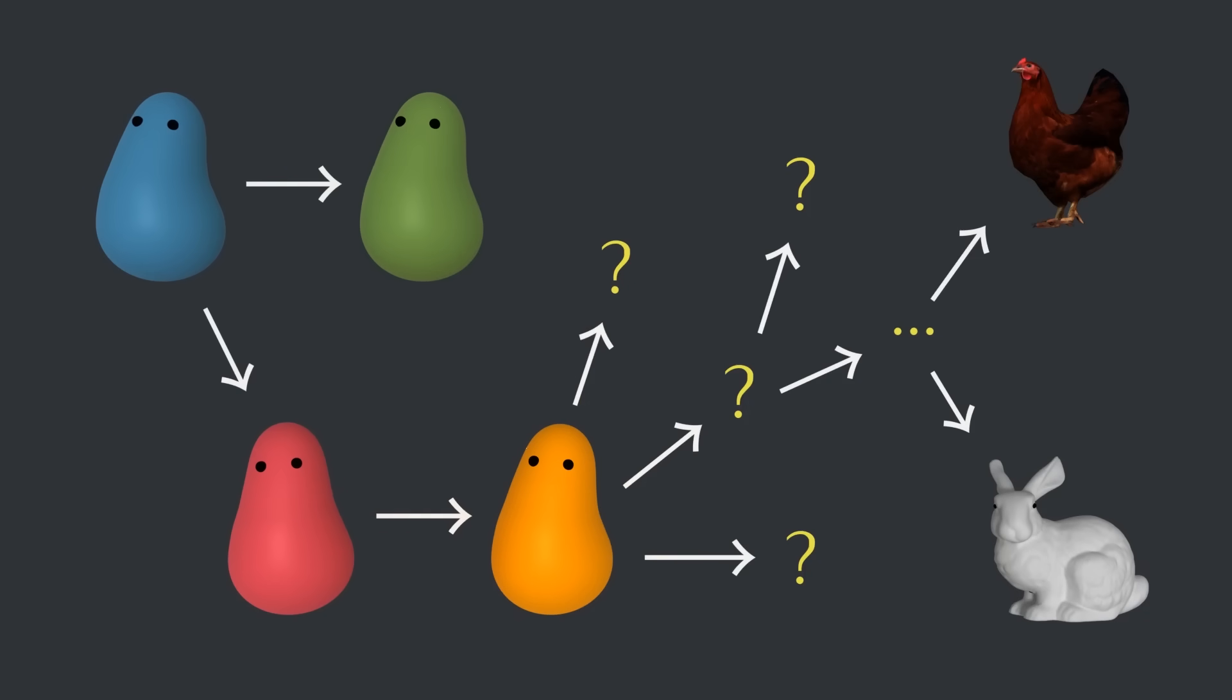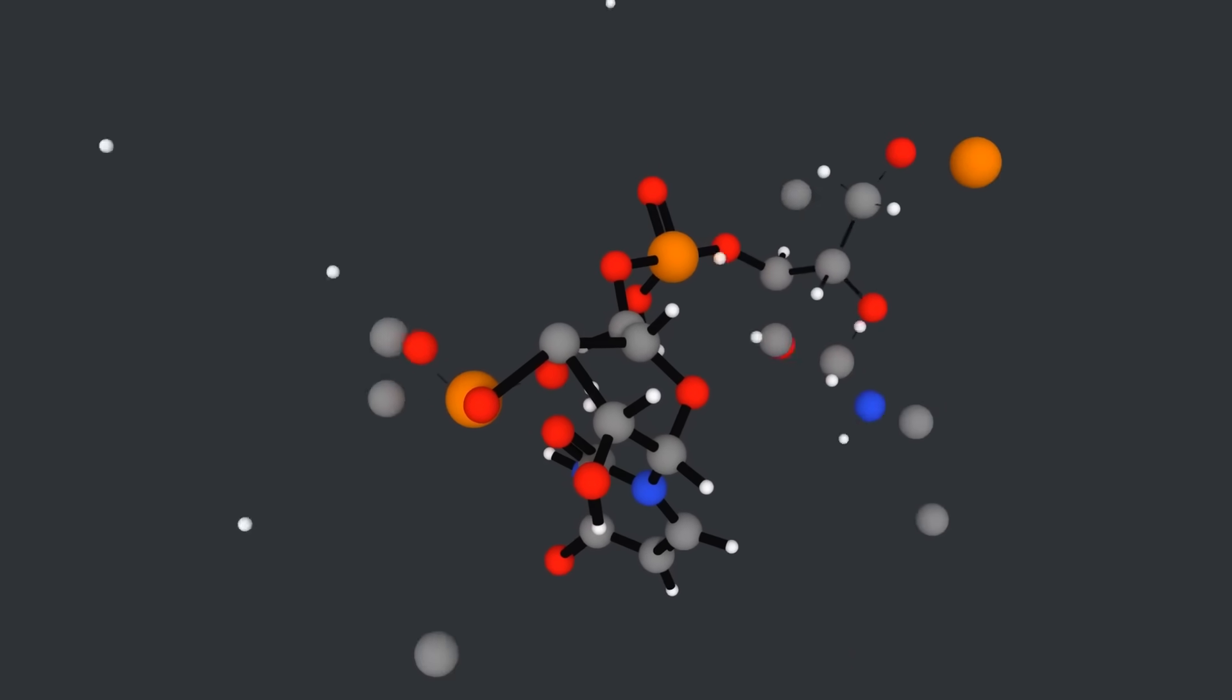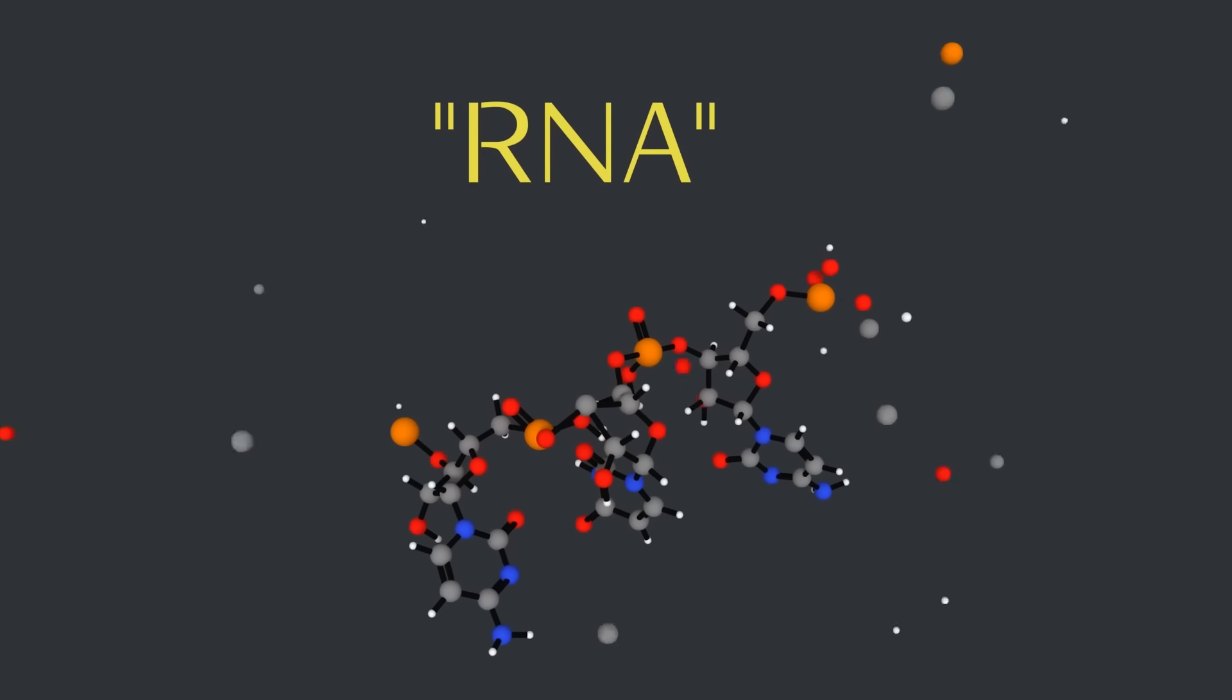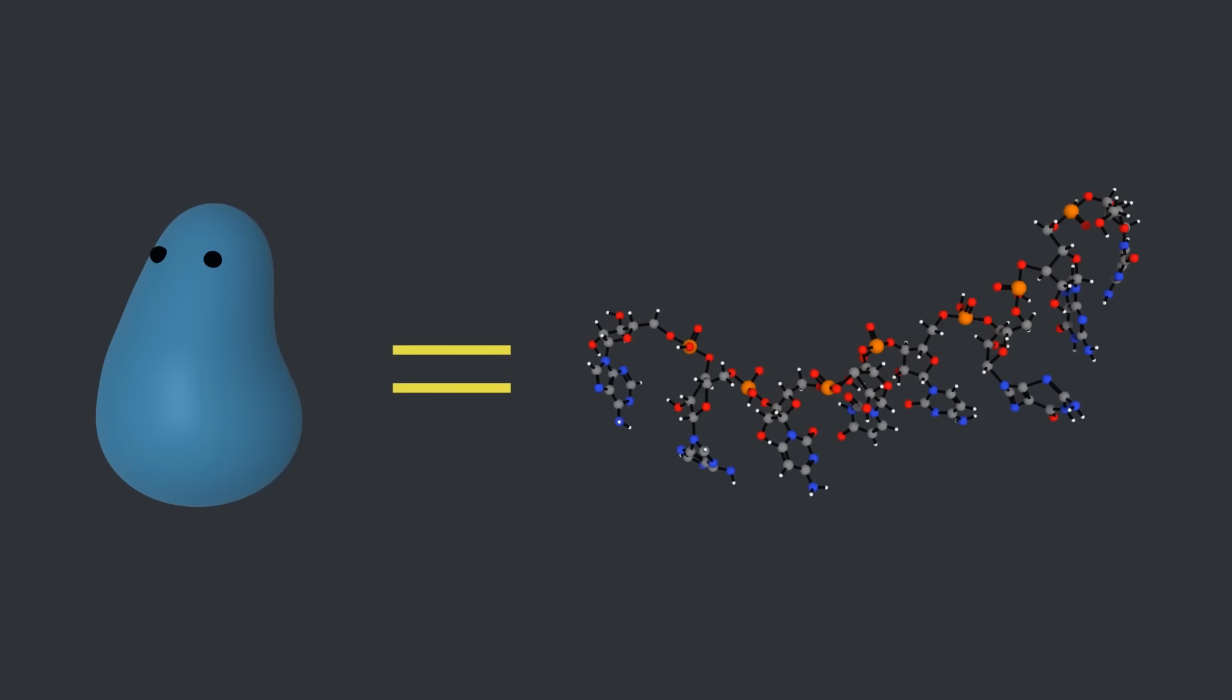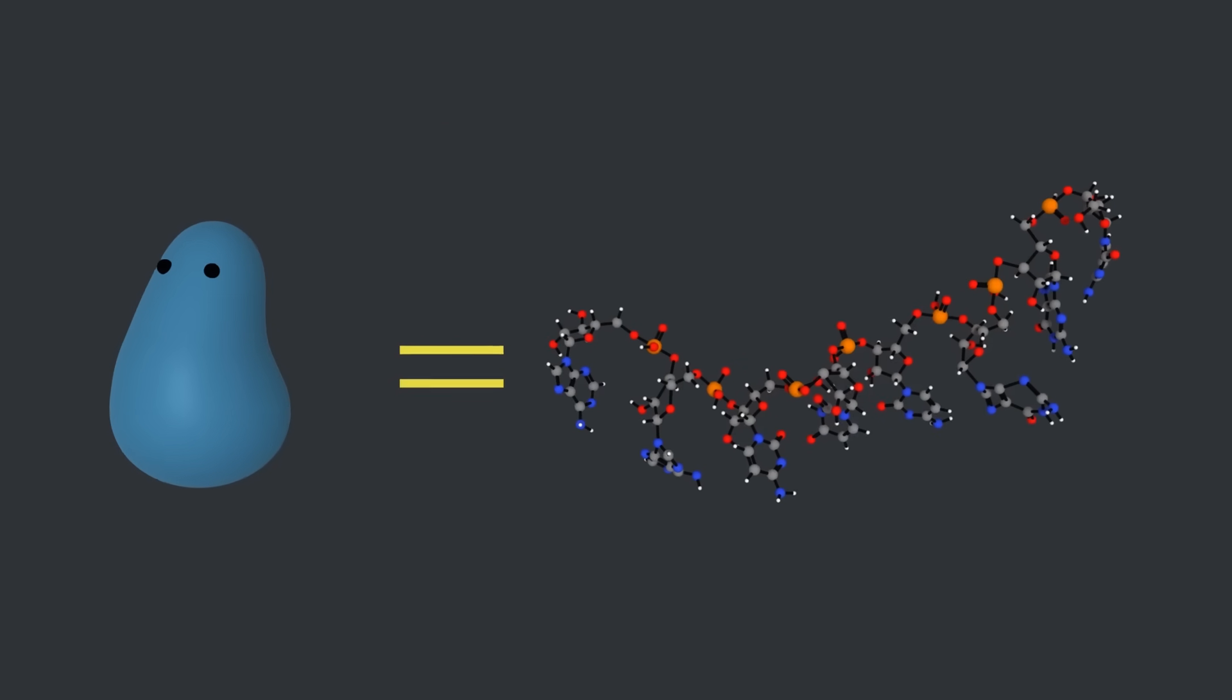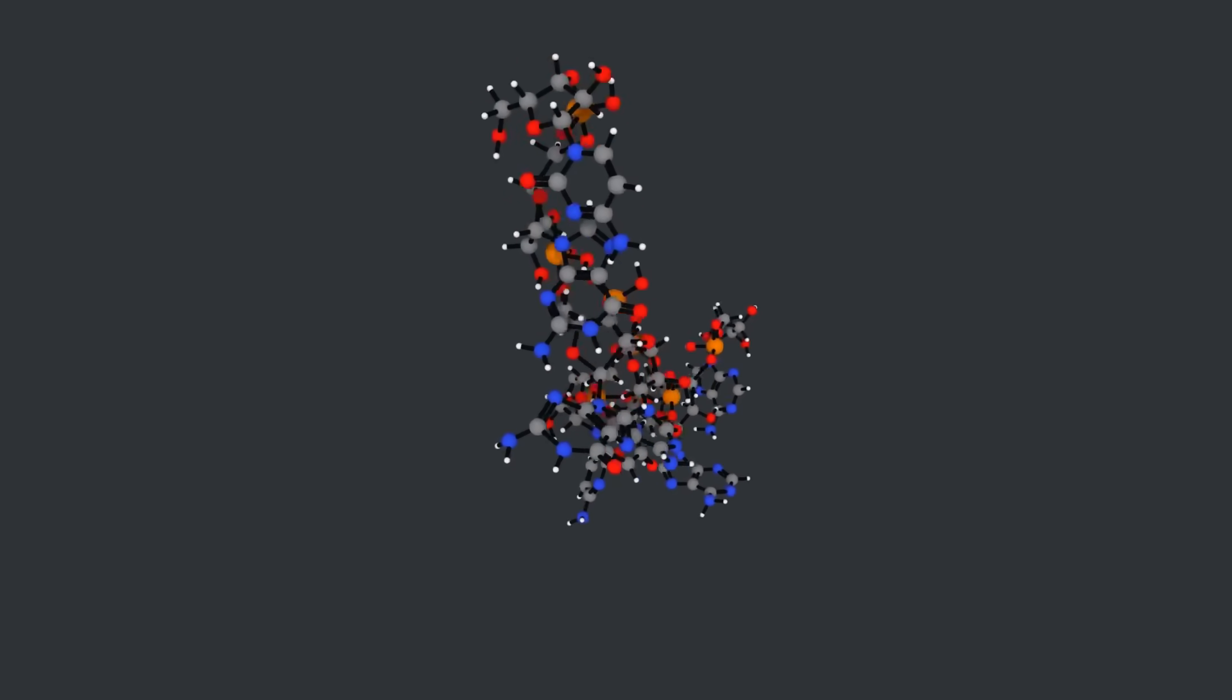We're still working out the details of how this played out in the real world, but we do have a leading candidate for the first replicator. It's a molecule called RNA. The basic story with RNA is that it's simple enough to form without having to come from replication, and yet it replicates, creating more of itself, just like our friends the blue blobs. You might be looking at a portrait of one of your ancestors, which is absolutely astounding if you ask me.